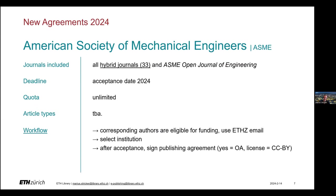Completely new is the agreement with the American Society of Mechanical Engineers, abbreviated ASME. ETH members can publish free of charge in all 33 hybrid journals of ASME and additionally in the ASME Open Journal. The acceptance date is crucial to determine whether a paper is funded. There is no annual quota. After submitting with your ETH email, select ETH as your affiliation, and once your paper is accepted, you will receive a request from ASME to sign the copyright transfer statement, choosing open access as the preferred publishing model and CC BY as the reuse license.